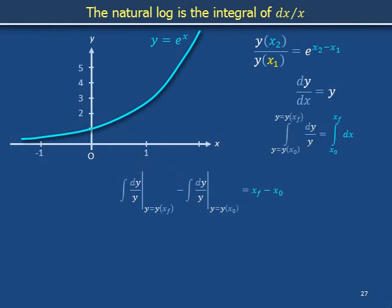Let's deduce the pattern we will find in the integration table corresponding to the indefinite integral dy over y. If we exponentiate xf minus x0, we should get, as noted a couple slides ago, the ratio y on xf over y on x0.